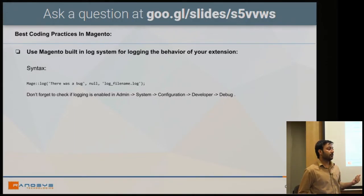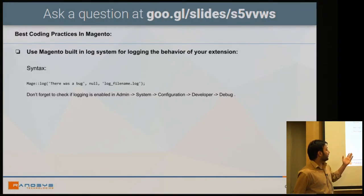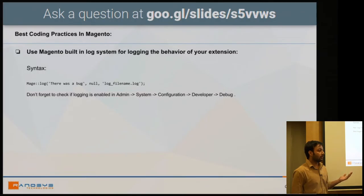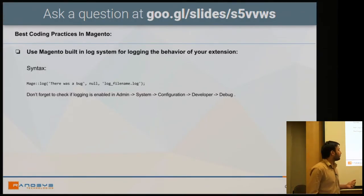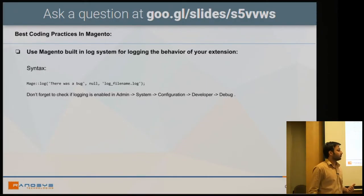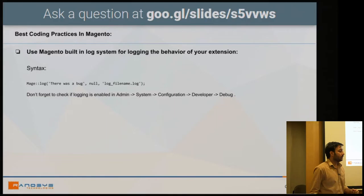Using logs is especially useful when debugging on a production site, where you cannot just echo/exit. Magento's log function takes a first parameter — any variable or array — a second parameter for log type (null for Zend log, or 1, 2, 3 for alert and different notification types), and a third parameter for the log file name. You can use Magento's existing system.log or exception.log, or create your own. Make sure logging is enabled in Magento settings, otherwise nothing will be stored.